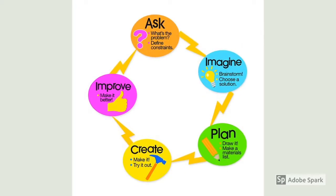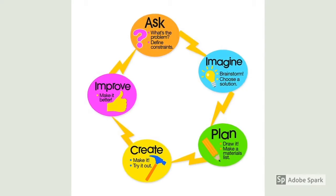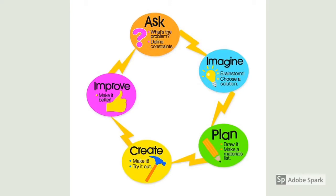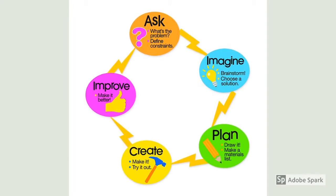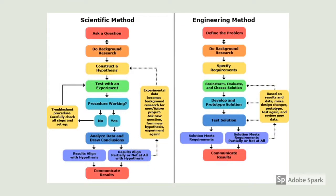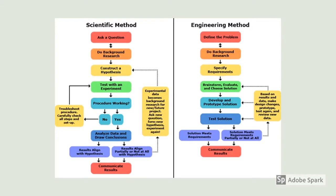Engineering is Elementary, or EIE.org, has created a simplified version of the engineering design process that works well for students — a great way to implement engineering in your classroom using this graphic organizer. Keep in mind the engineering design method is not the scientific method, although they are similar in some ways. Scientists use the scientific method to make testable explanations and predictions about the world, asking a question and developing experiments to answer it. But engineers use the engineering design process to create solutions to problems.